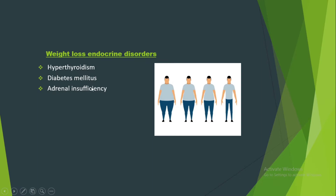Adrenal insufficiency is that condition in which adrenal hormone is less than its normal value, especially cortisol. What is cortisol? Cortisol is basically a stress hormone. It is known as a stress hormone because it is released in response to stress — when we are in a stress condition, our brain needs more energy.